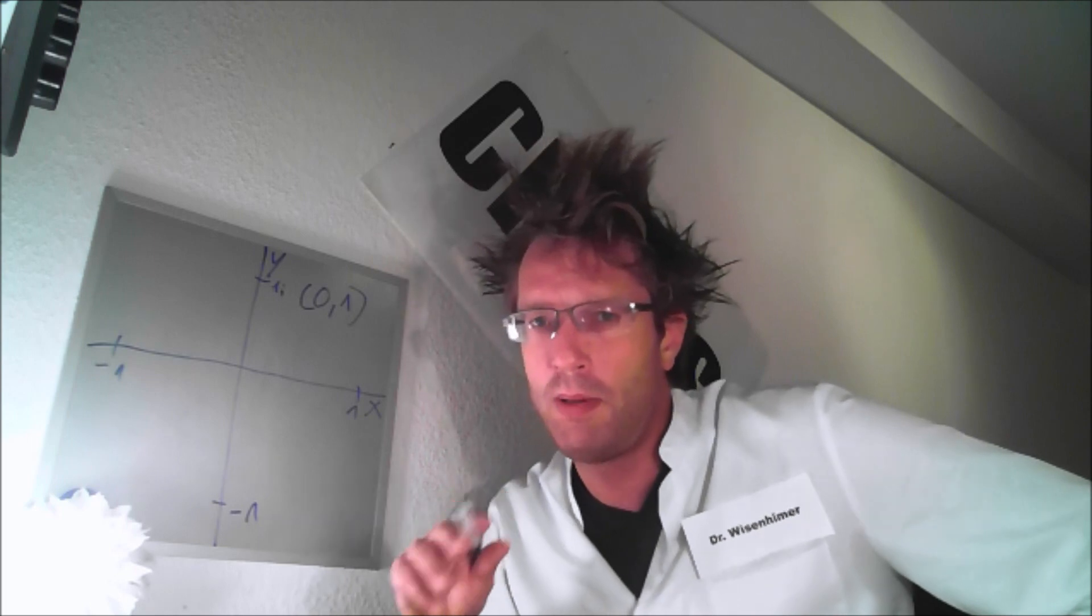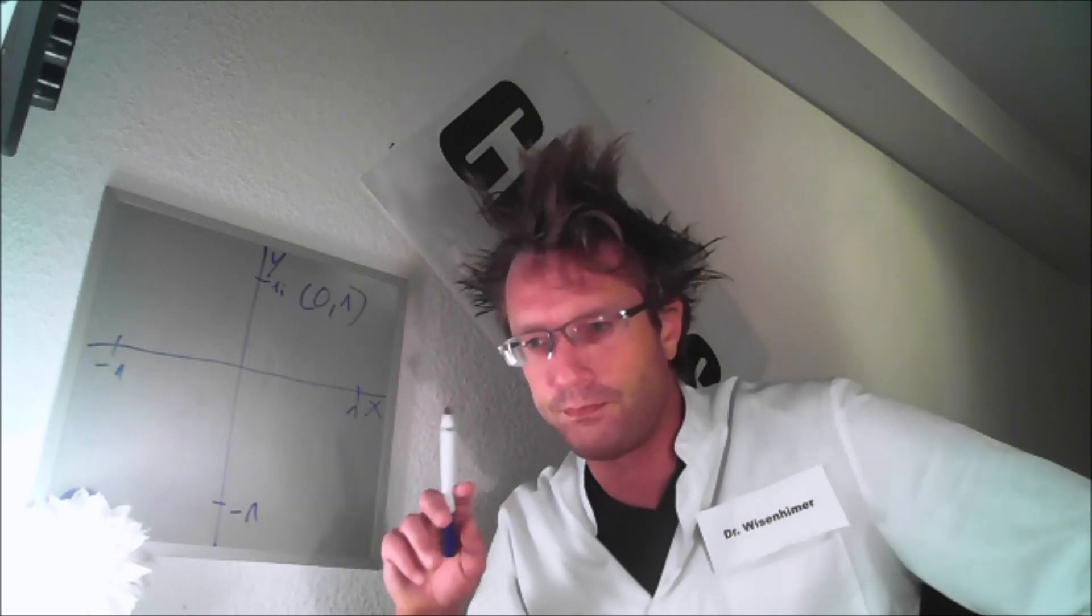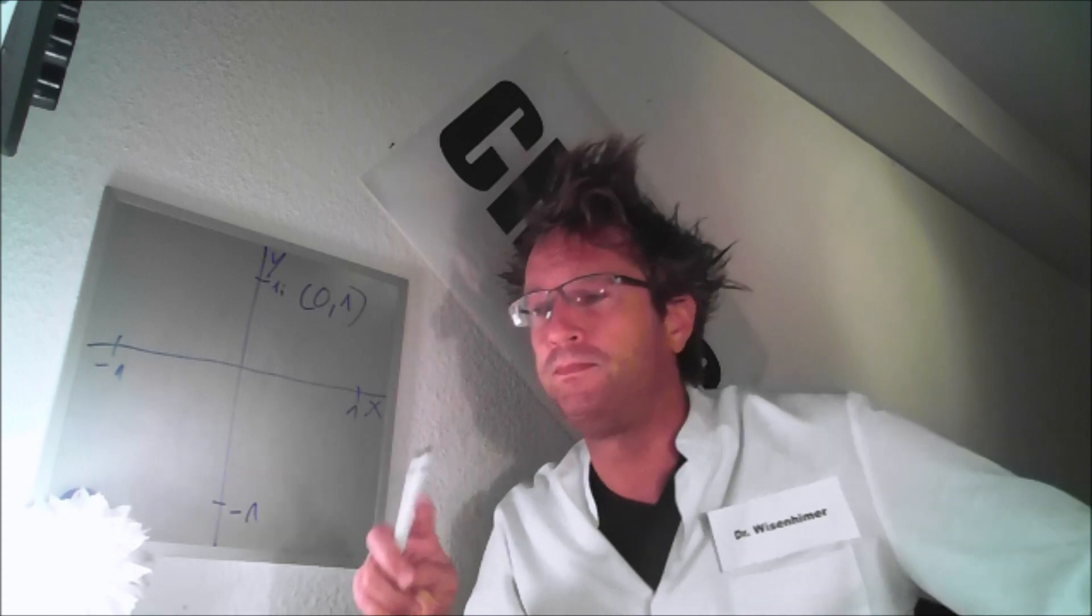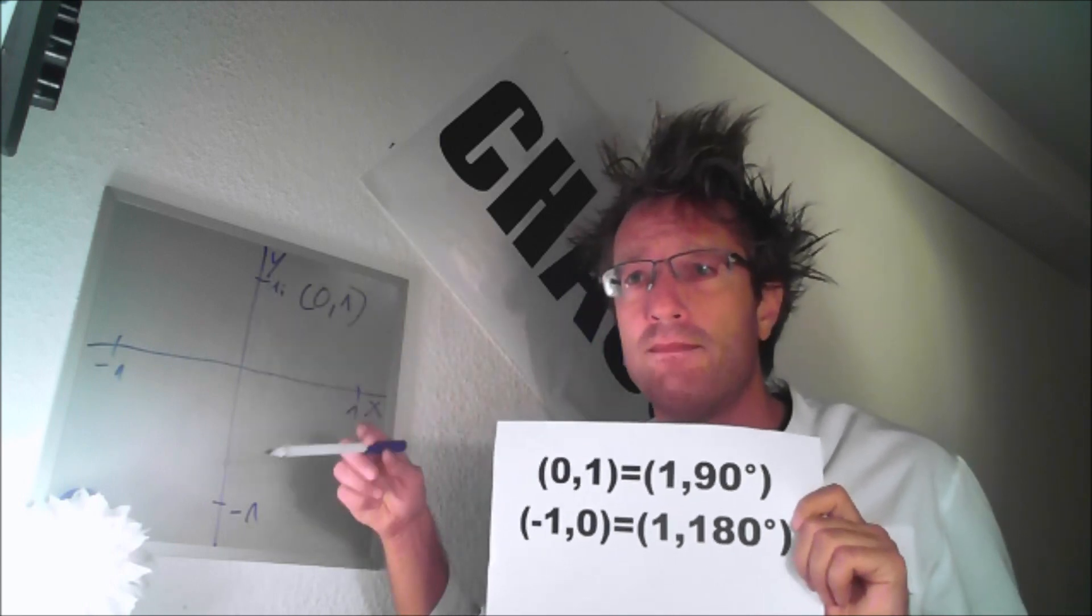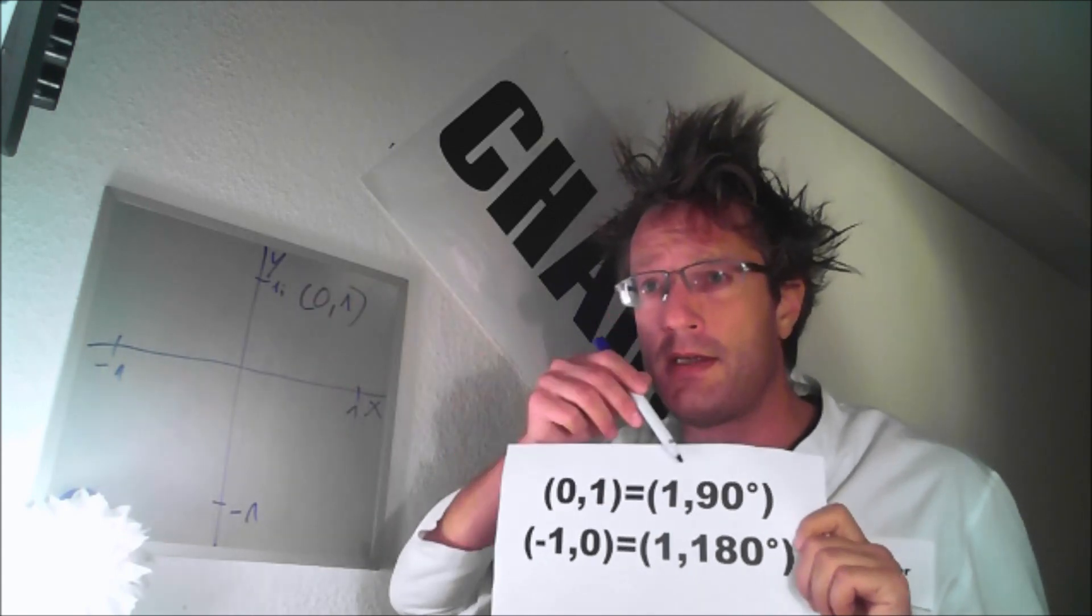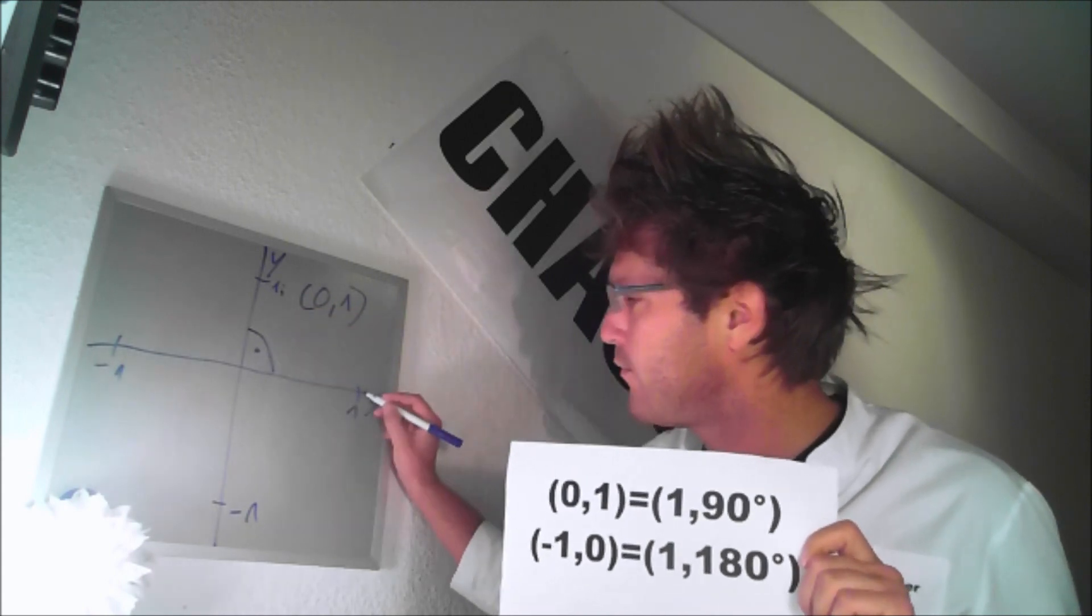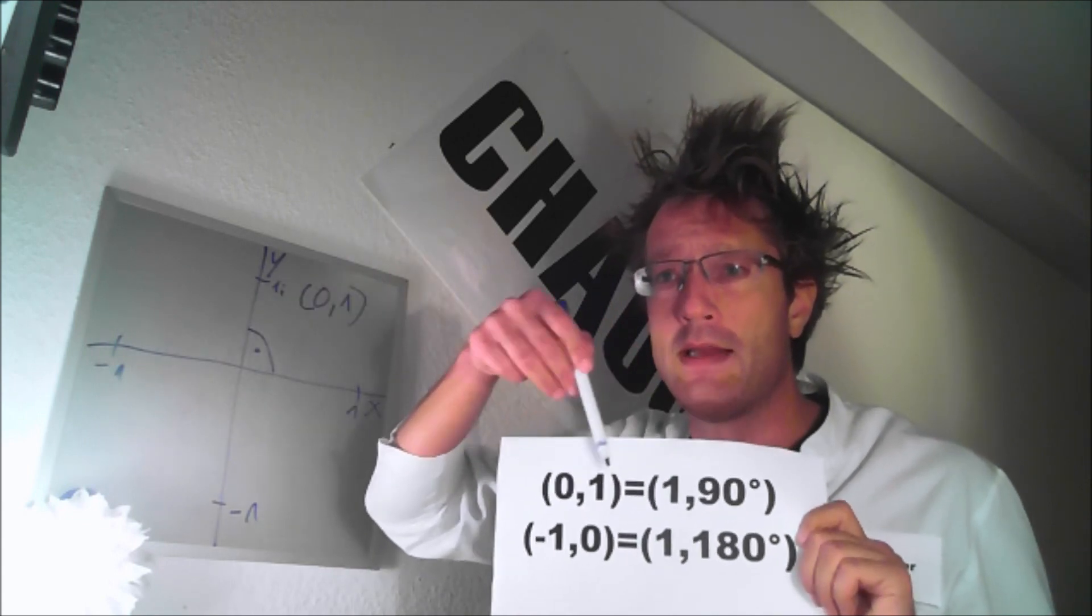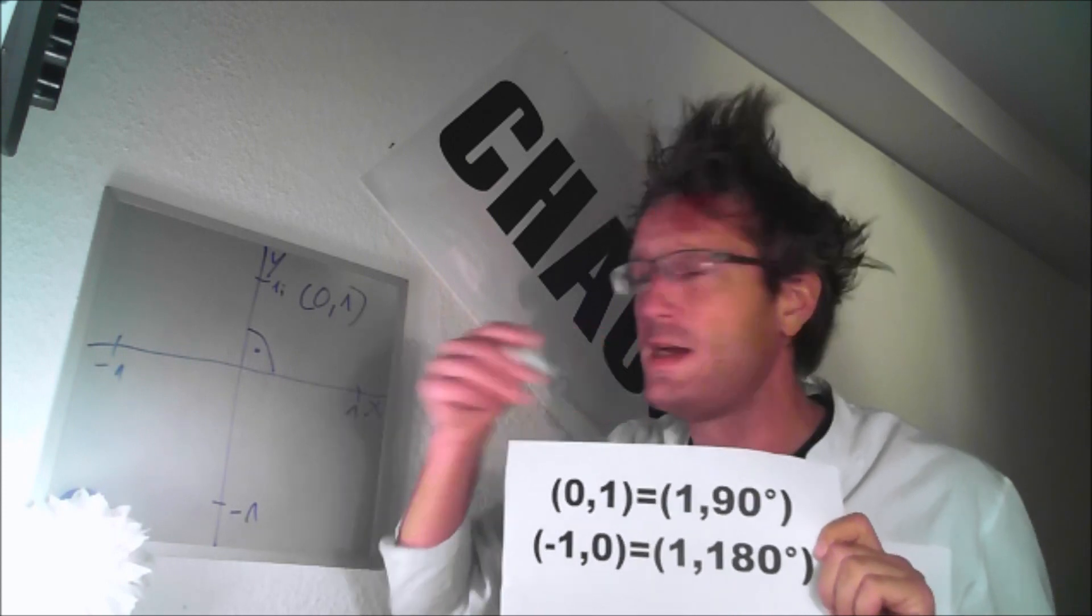But now we are coming to the crucial part. Another way of representing complex numbers is by using a polar coordinate system, where each point is defined through a distance to its center and an angle. When using this with our coordinate here, we have the (0,1) coordinate, which has a distance 1 to its center. And here we have the angle 0 and the number negative 1, 0, has the same distance to its center, 1. So it stays 1, but we have 180 degrees.